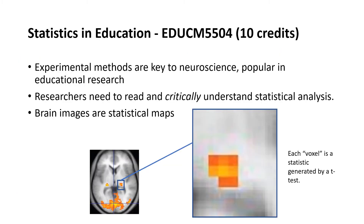You'll also be studying some statistics in education. However you feel about statistics, they are absolutely key to neuroscience and they're also increasingly popular as a part of educational research. Even if you decide to focus on research for your dissertation that is not involving measuring and not involving statistics, it's still going to be important for you to understand and be able to critically read the statistical analysis that you see in the papers of other researchers.